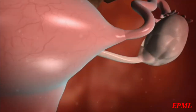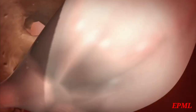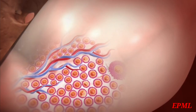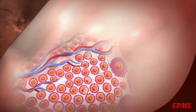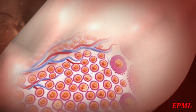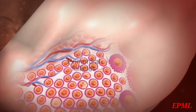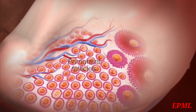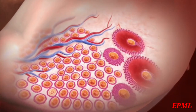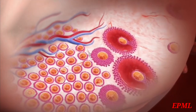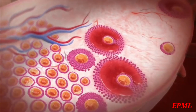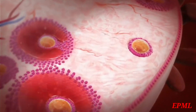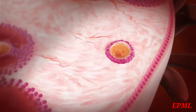At the onset of female puberty, tens of thousands of primary oocytes each form part of a primordial follicle in the ovaries. Between menarche and menopause, each primordial follicle develops into a mature follicle, and its primary oocyte completes meiosis I.